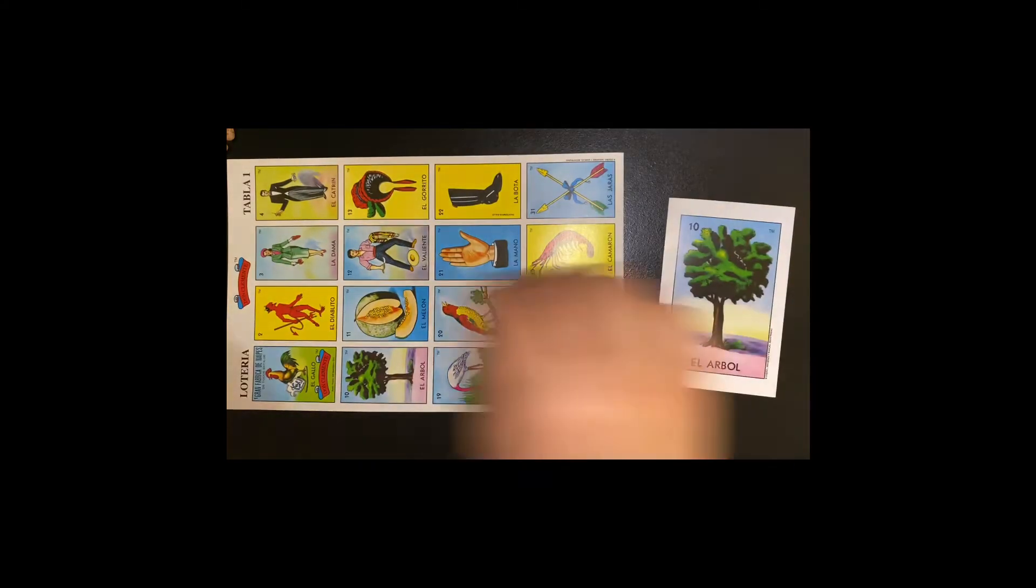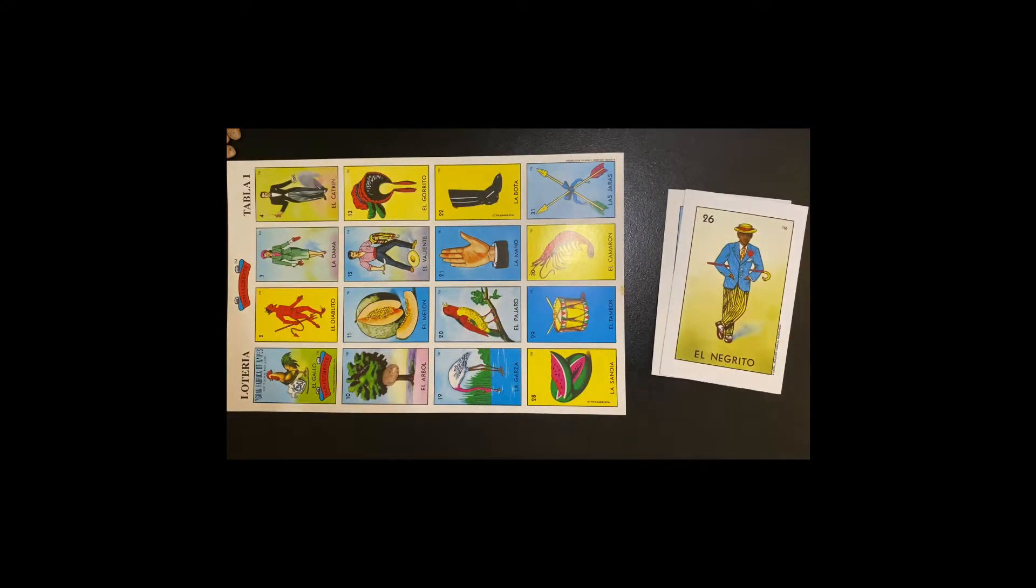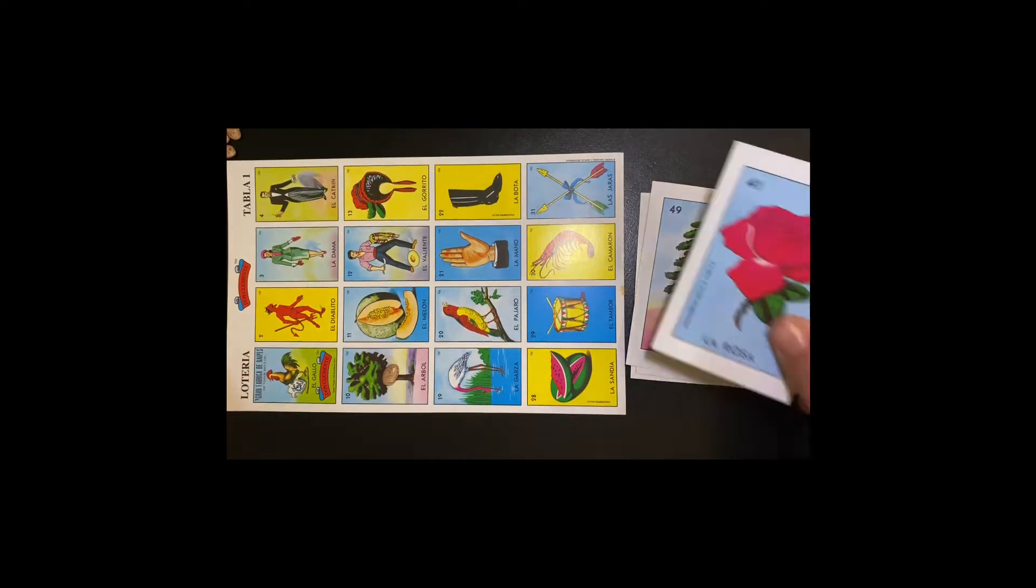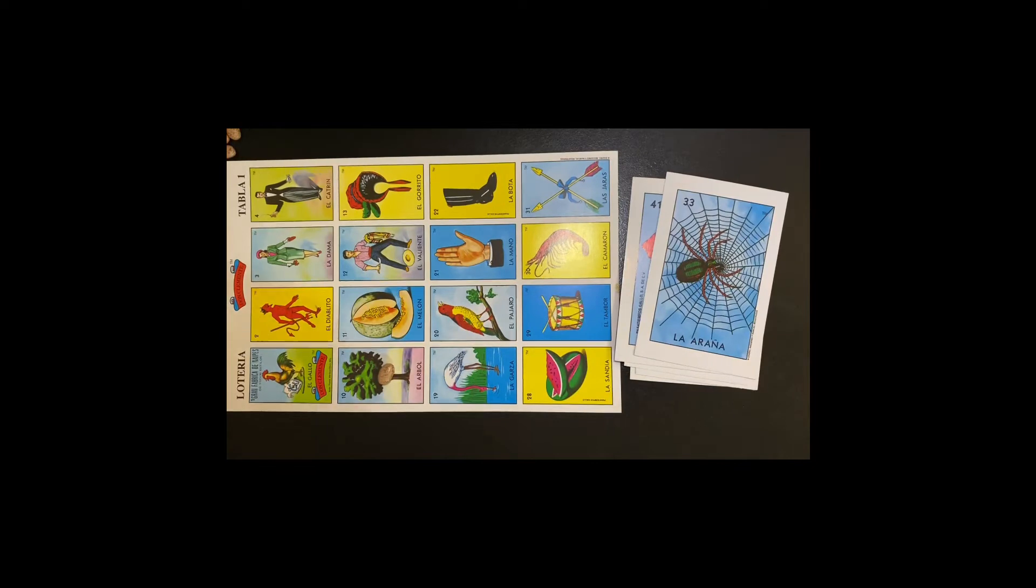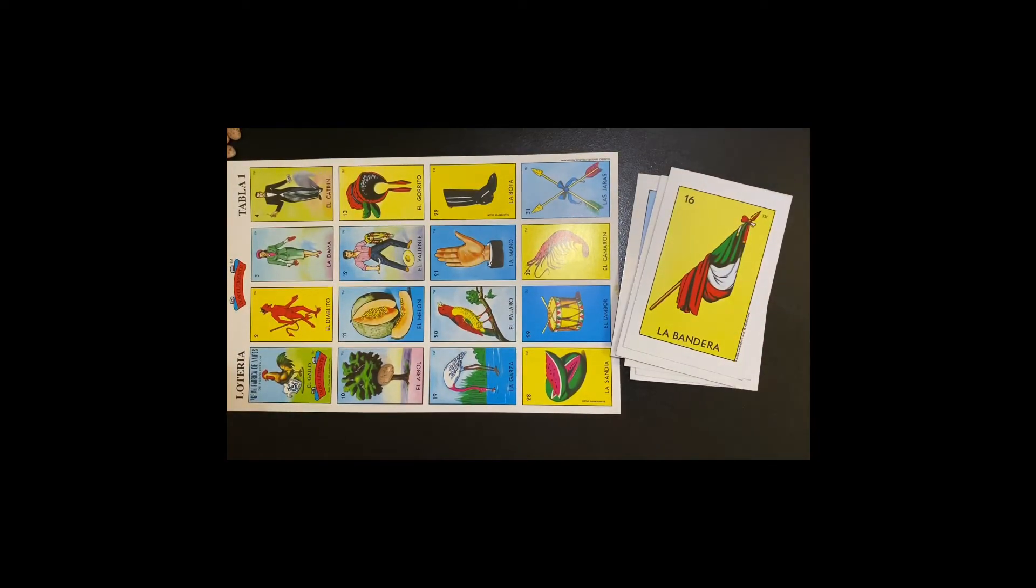Let's start. Three, two, one. El árbol. I have it. El negrito. El pino. La rosa. La araña. El cotorro. La bandera.